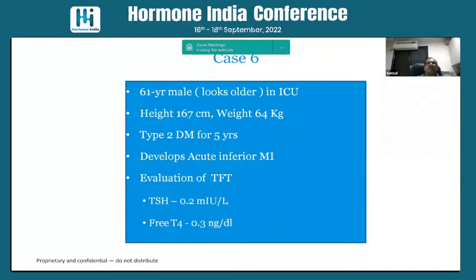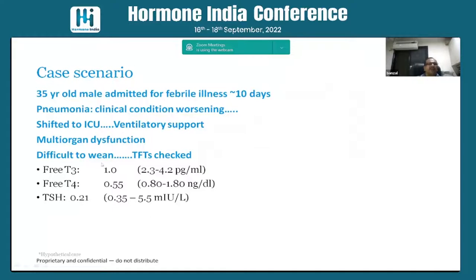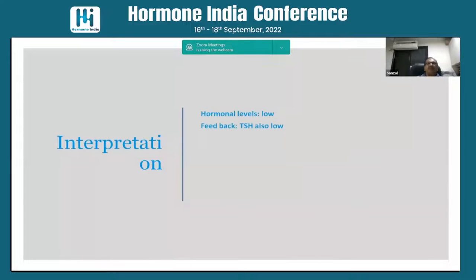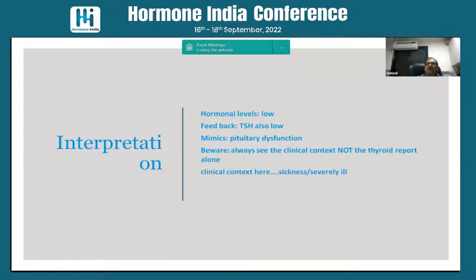Case six: a 61-year-old lady in ICU with diabetes for 5 years who had an acute MI. TSH is low and free T4 is low — we call this a non-thyroidal illness (NTI) or sick euthyroid syndrome. Another patient on ventilator support with pneumonia also has low T3/T4 and low TSH — but this may not be pituitary dysfunction. We should avoid testing thyroid function in seriously ill ICU patients unless clinical suspicion of thyroid disease is strong.